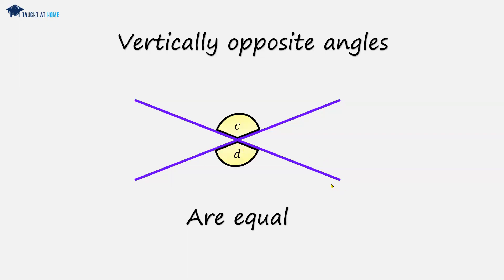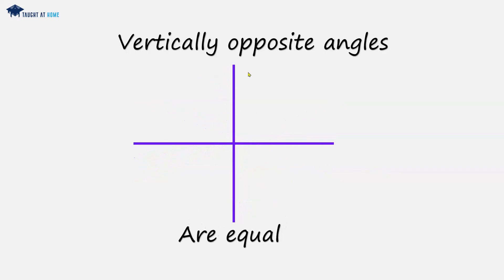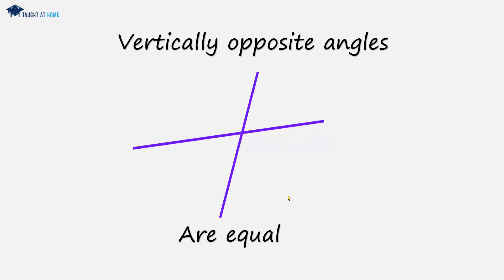Likewise, we could have c and d — c at the top and c underneath — these are vertically opposite and so these two will be equal. We might also have vertically opposite angles that are all right angles, so we have 90 degrees and opposite we have 90 degrees, and these are also vertically opposite.